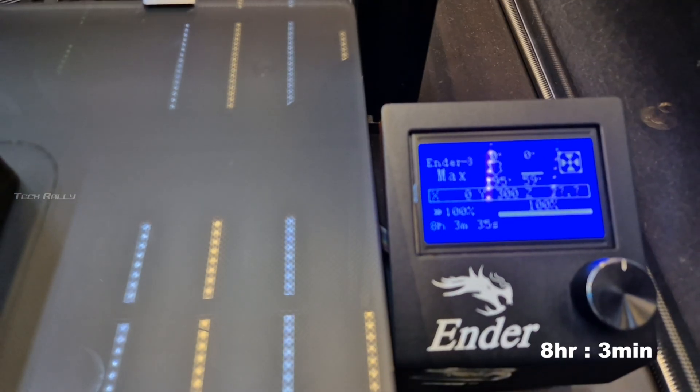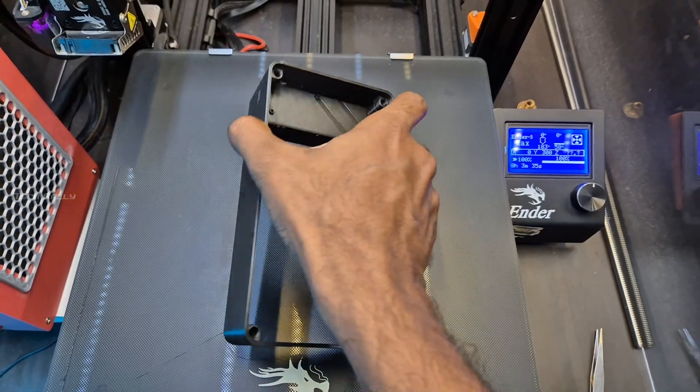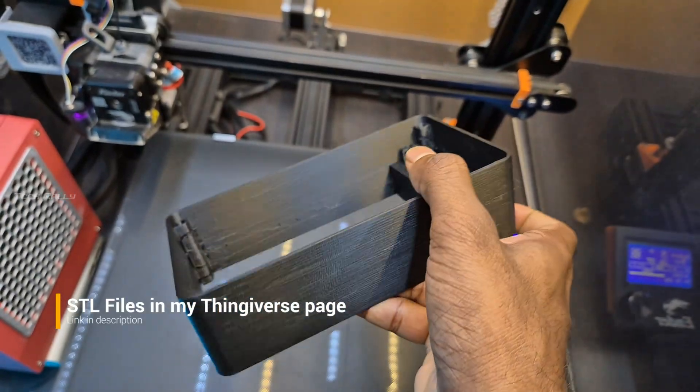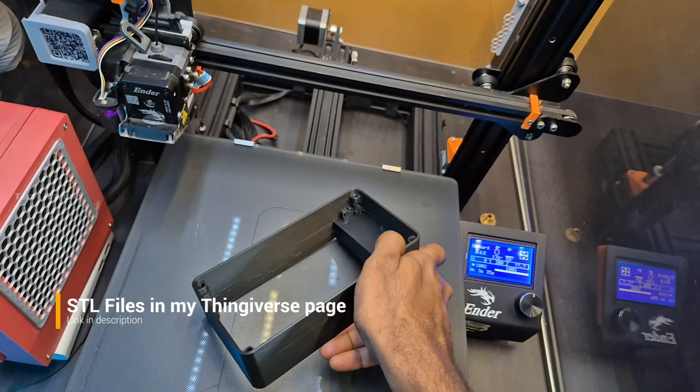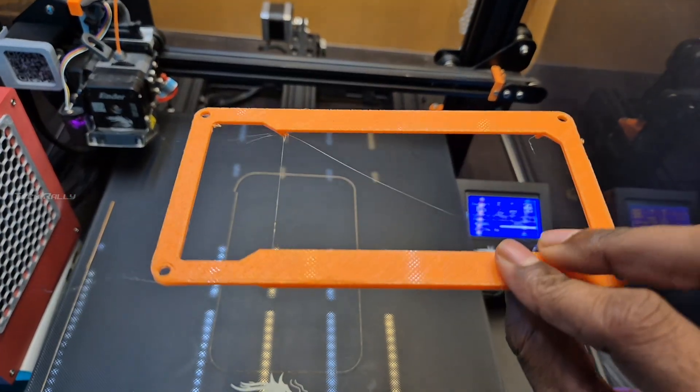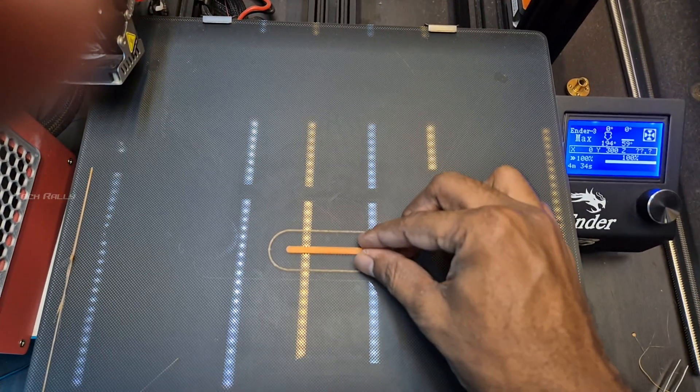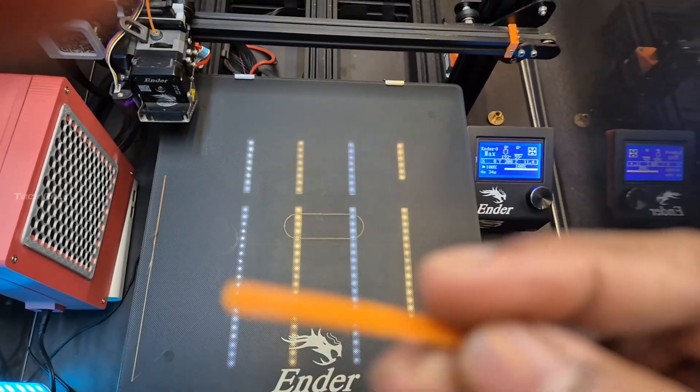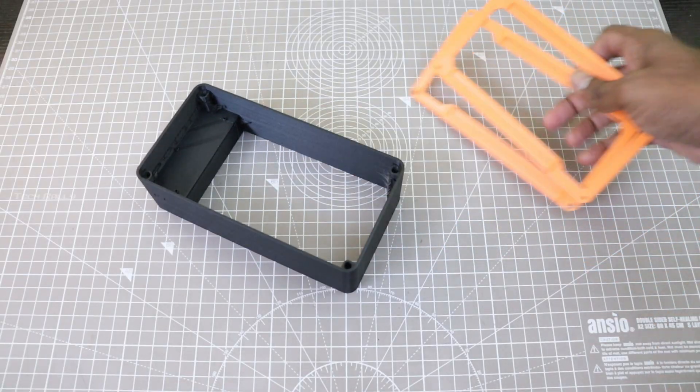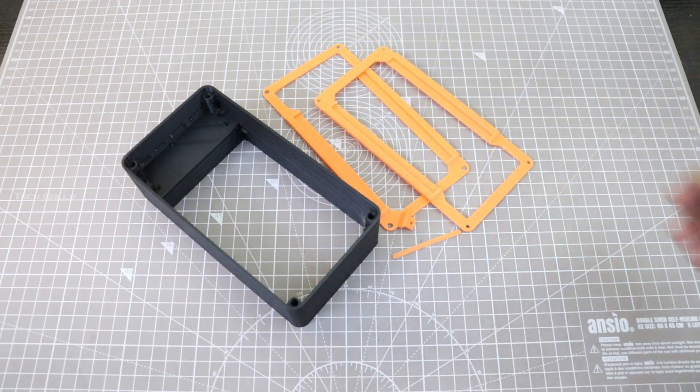It took 8 hours to print this. The surface looks good and stringing occurs only on the support printed areas which can be easily removed. I also printed the bottom brackets and this small design element. These are the complete 3D printed parts. The link for the STL files in the description.